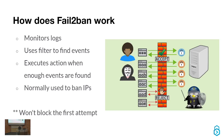So how does it work? It monitors logs, watching them for new events. It uses filters to find events in those logs — basically a regex filter, regular expression. Then it executes actions when enough events are found. It goes through and counts up, and when it hits enough events for a certain IP, it does something. Normally that's used to ban IPs, but you could do it for all sorts of other stuff, like a notification if there are more than 400 accesses on a website.